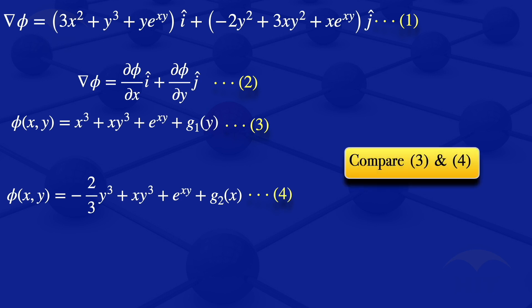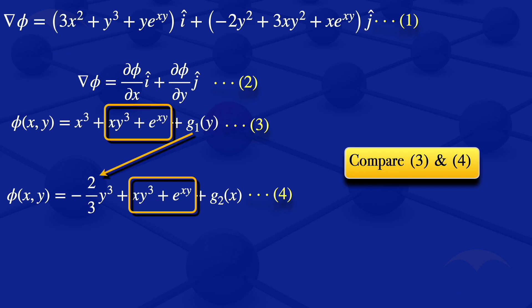Comparing equations 3 and 4: the left-hand sides are both φ(x, y). The common terms xy³ + e^(xy) appear in both. In equation 3, g₁(y) is a function of y only, corresponding to the −(2/3)y³ term in equation 4. So g₁(y) = −(2/3)y³, and therefore φ(x, y) equals x³ + xy³ + e^(xy) − (2/3)y³.